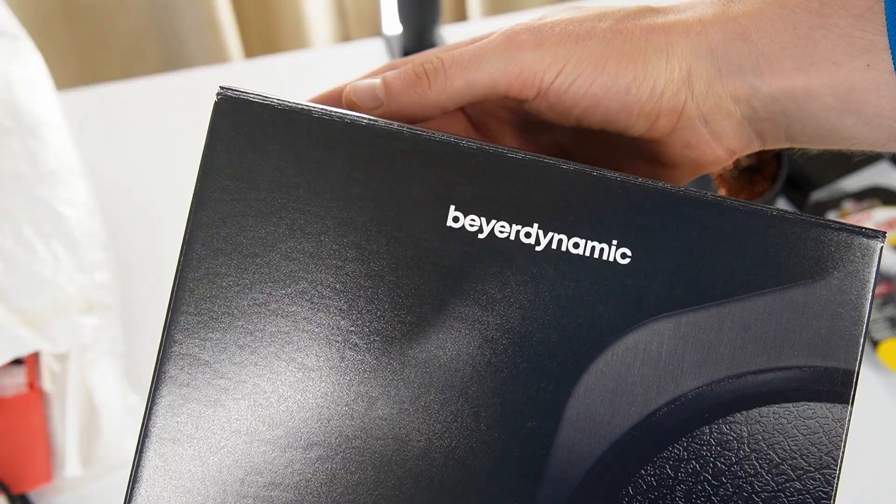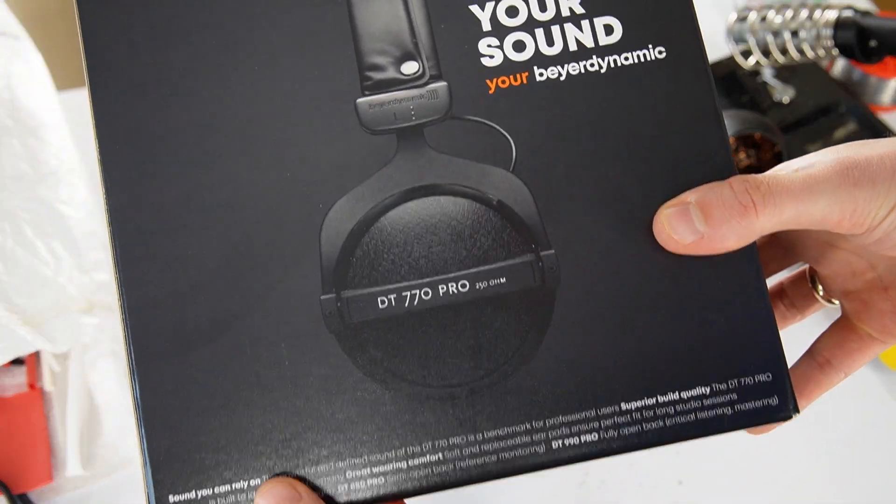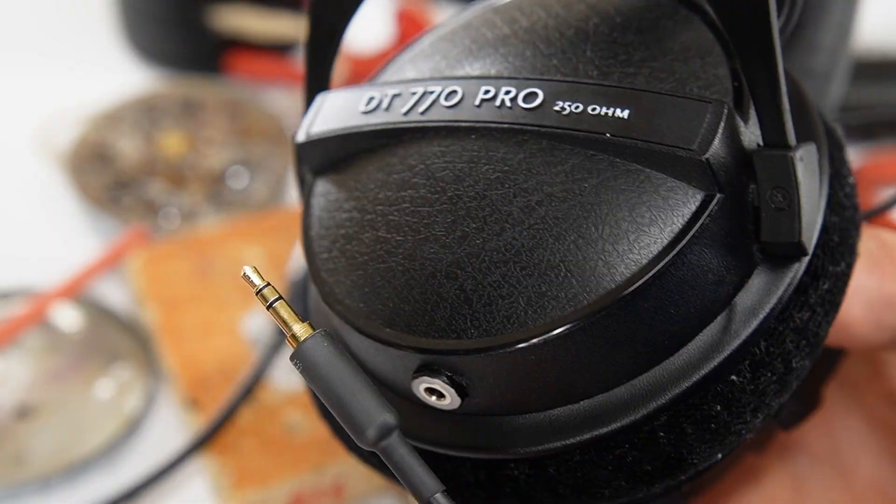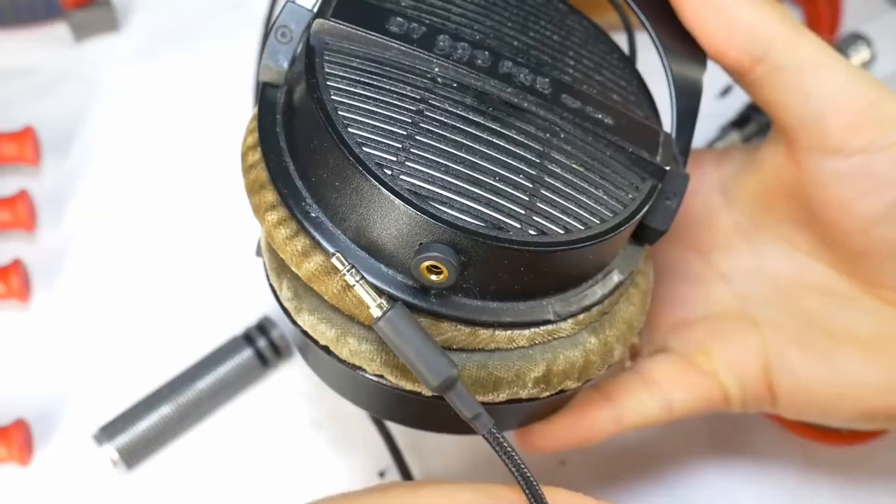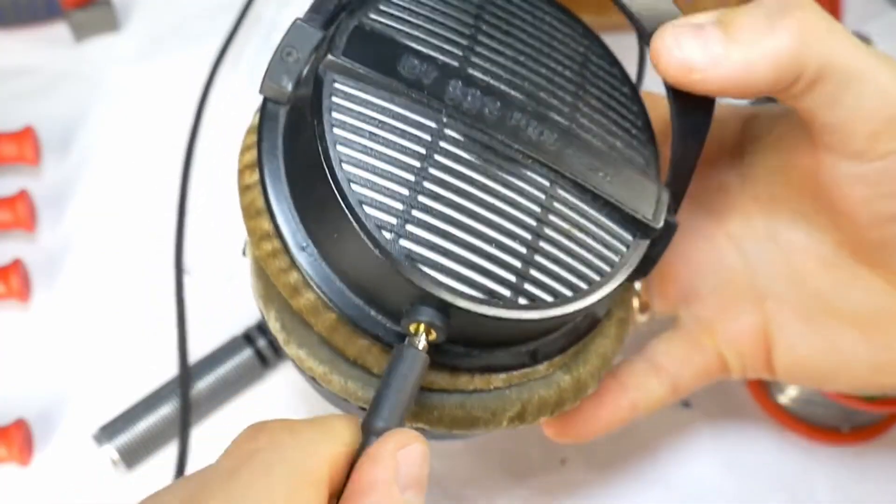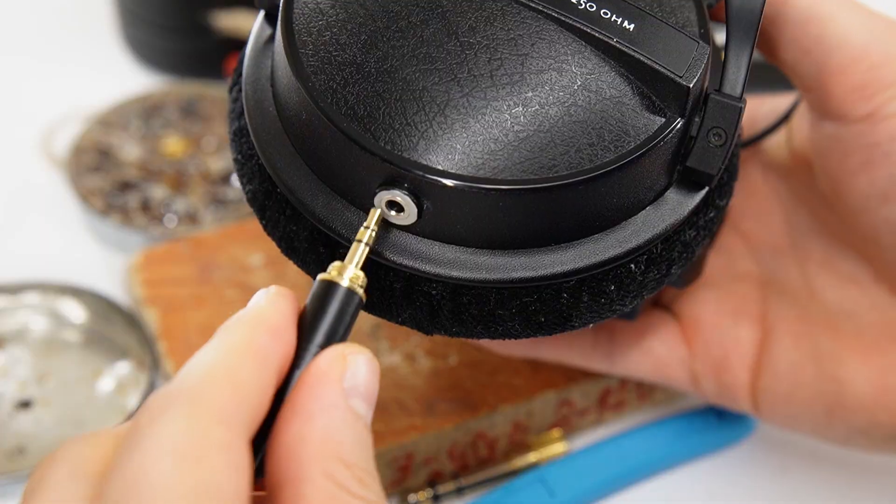Hi! Today I'll show you how to make these Beyerdynamic DT770 Pro headphones with a detachable cable mod. This method also works the same for DT990 or DT880 headphones.